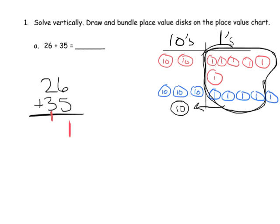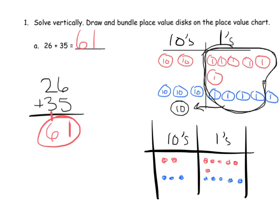Down the road, kids will just use dots. To model 26 they draw two dots in the tens and six in the ones; for 35, three dots in the tens and five in the ones. Then they do essentially the same bundling process — six and four make ten, that ten moves to the tens place, leaving one in the ones and six in the tens. That's a sneak preview, but right now we want second graders using the labeled circles.